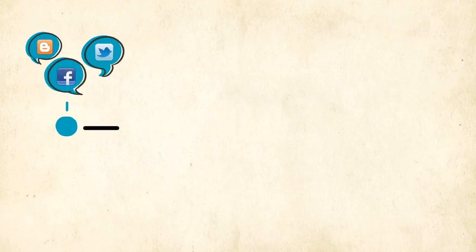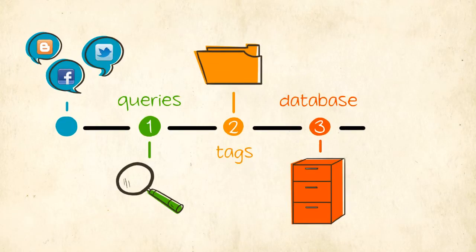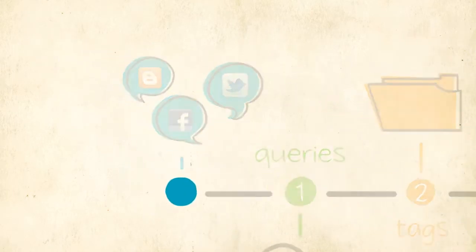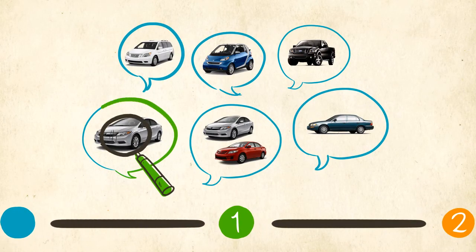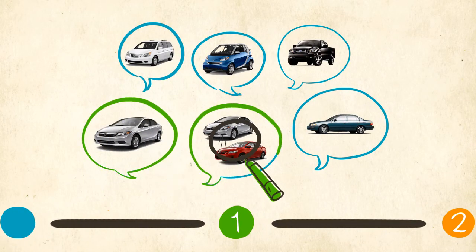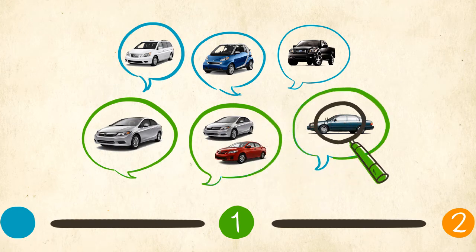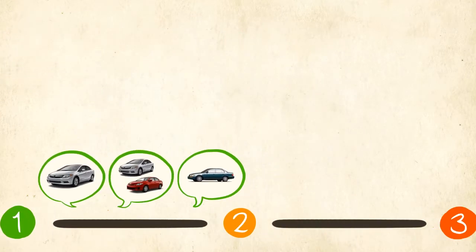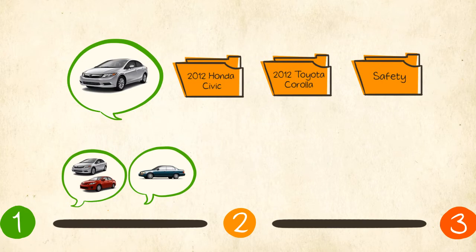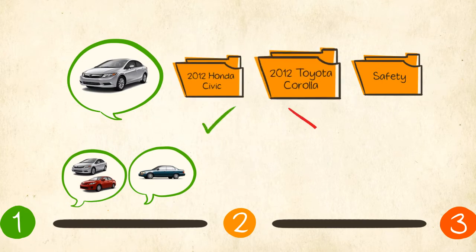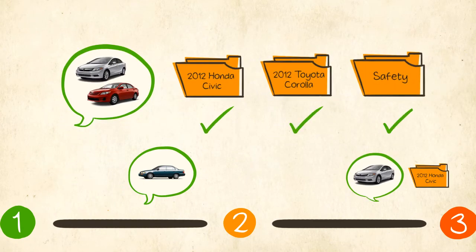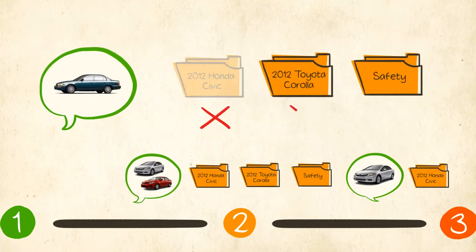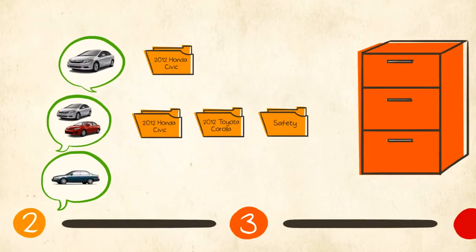Let's go through our car example again to further illustrate how the process works. Queries will first find all tweets, blog posts, and other online conversations that talk about either the Honda Civic or the Toyota Corolla. Each conversation is then checked against all three tags. In order for a conversation to be successfully tagged, it must meet an associated tagging rule. A conversation can have multiple tags, and if it fails to meet any of the tagging rules, it will not be stored in the Heartbeat database.